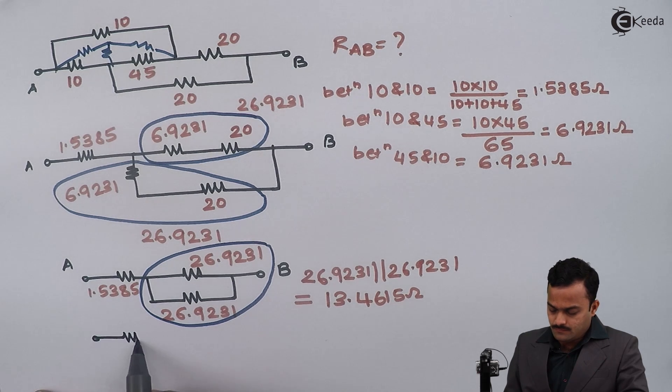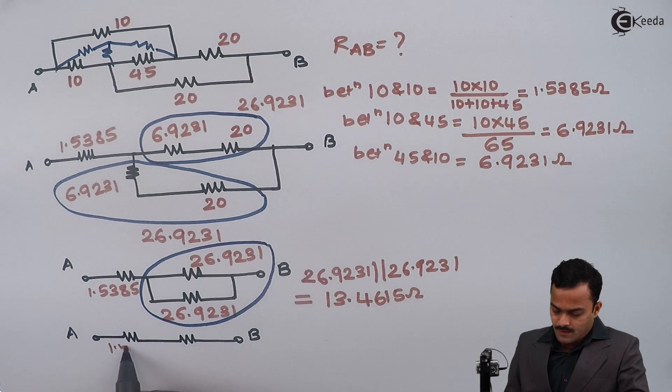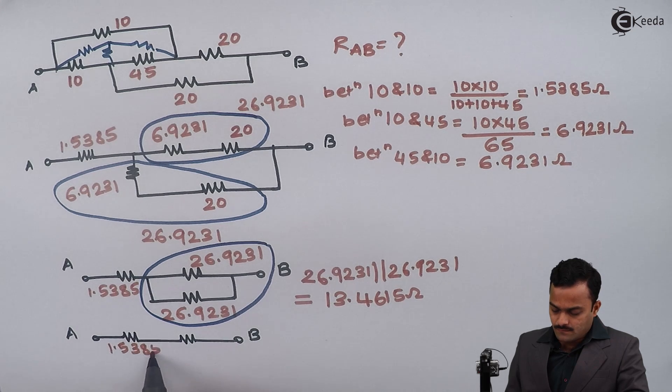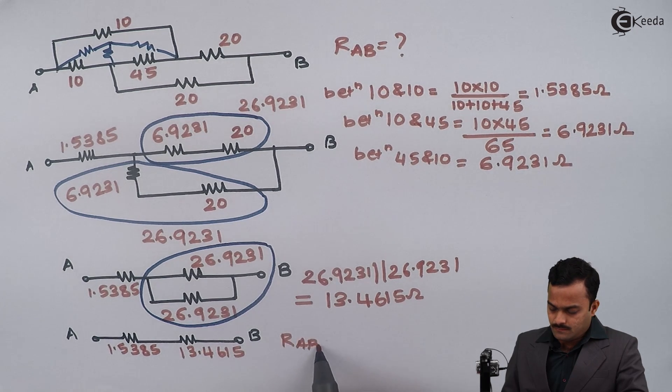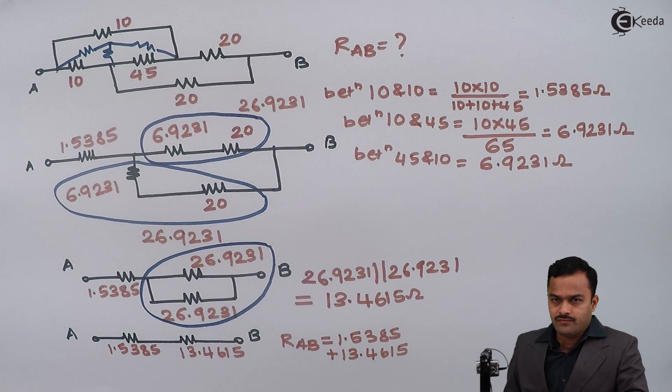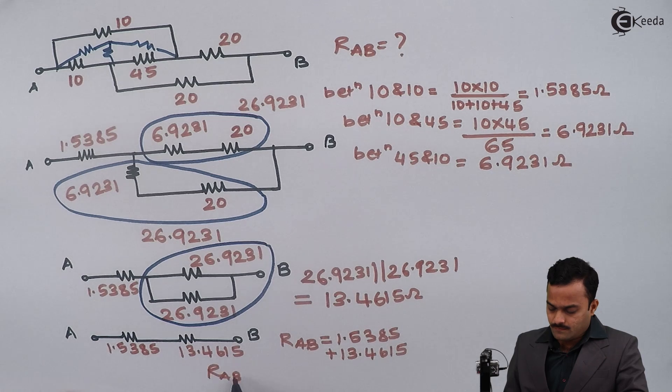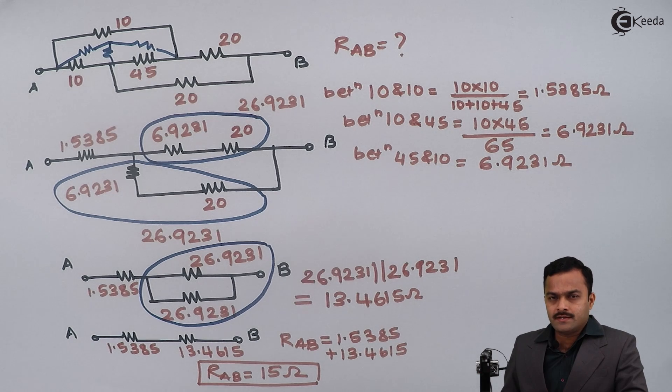So that I will get equivalent resistance between points A and B: 1.5385 plus 13.4615. If I solve this, I will get final answer, that is equivalent resistance between points A and B as 15 ohm. Thank you.